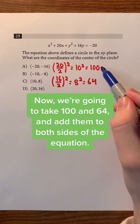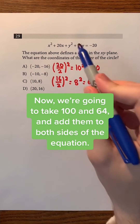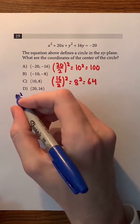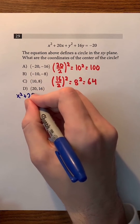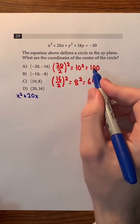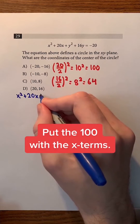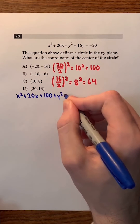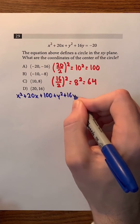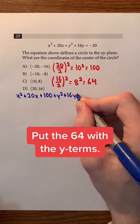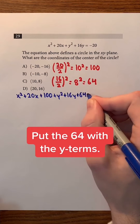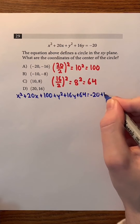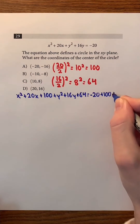Now we're going to take 100 and 64 and add them to both sides of the equation. So we have x squared plus 20x, and we're going to put the 100 with the x terms, plus y squared plus 16y, and we're going to put the 64 with the y terms, equals negative 20 plus 100 plus 64.